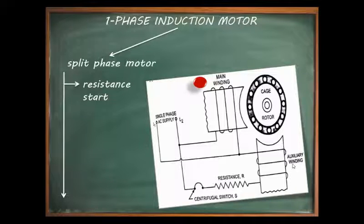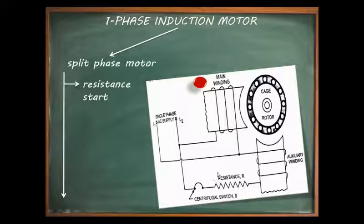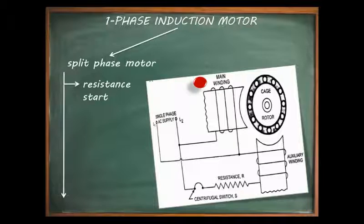In this type of motor an extra resistance is added in series with the auxiliary winding, creating a phase split between the two windings — hence it is called the resistance start single phase induction motor. After the motor acquires 75% speed, the centrifugal switch as shown in the figure opens and the auxiliary winding is cut off from the main winding.